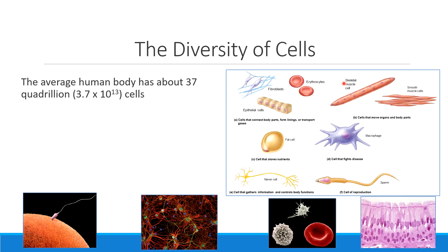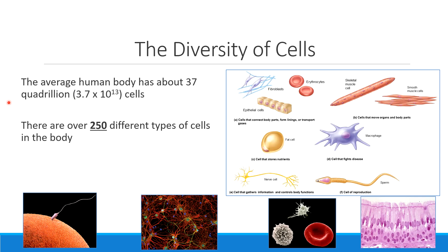When we talk about cells in general, the body has something like 37 quadrillion cells — that's 12 zeros behind this number. Many, many cells. And as you can see from our pictures, there are different types of cells as well. Of those 37 quadrillion, there are about 250 different types. They have different shapes — and remember, their shape being their anatomy means their physiology is different as well. Different shapes, different sizes, and very importantly, different functions.